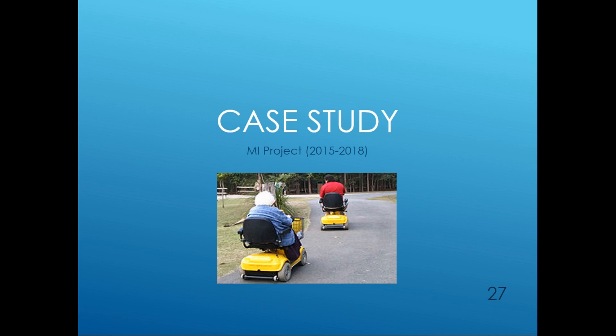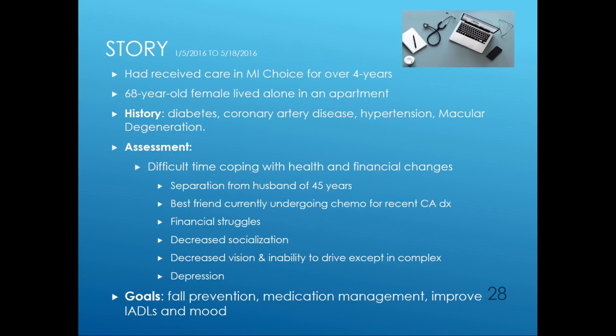Here's a case study of a real-life MyChoice participant who received this model of care during our pilot study. Prior to receiving care, this person had been in the MyChoice program eight years. She's a 68-year-old female who lived alone in an apartment. She had a history of diabetes, coronary artery disease, hypertension, and macular degeneration. On assessment, she was having difficulty coping with her health and finances and had separated from her husband of 45 years. Her best friend was undergoing chemo for cancer, and she had financial struggles, decreased socialization, decreased vision and inability to drive, and depression. Her goals were to improve her ability to prevent a fall, medication management, and improve IADLs and her mood.